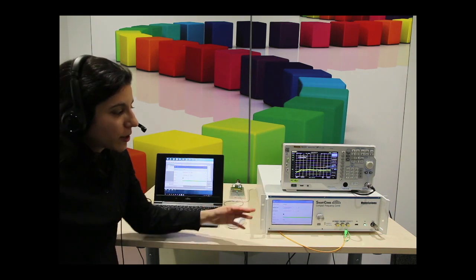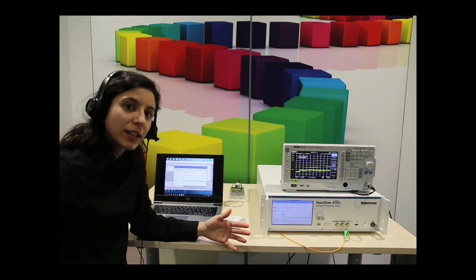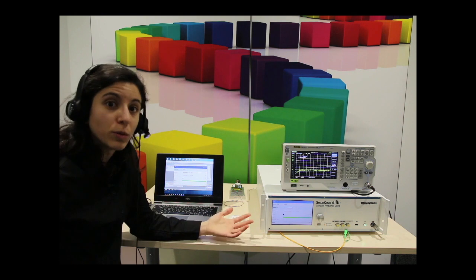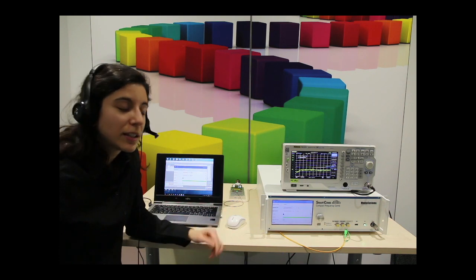Typically the SmartCom comes with a beat detection unit at 1542 nanometers, but we can put another two beat detection units at the wavelength that you want.